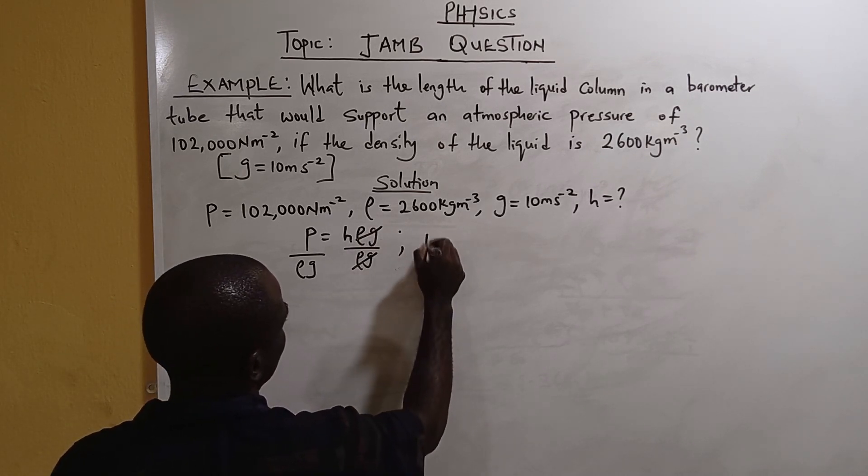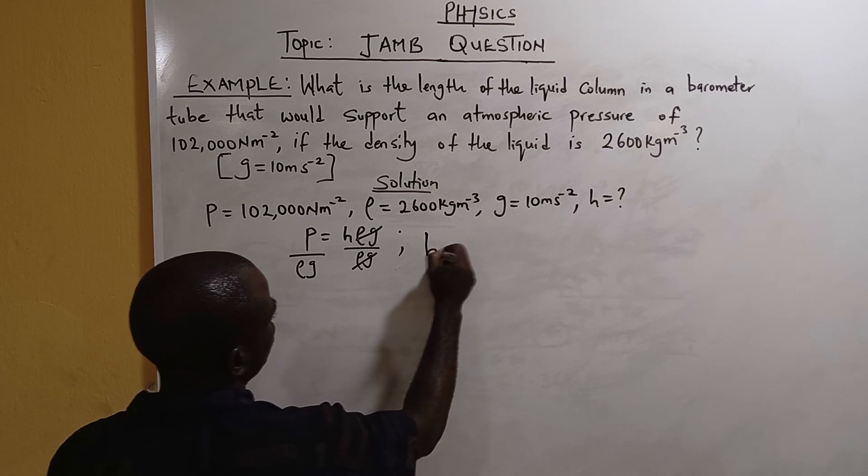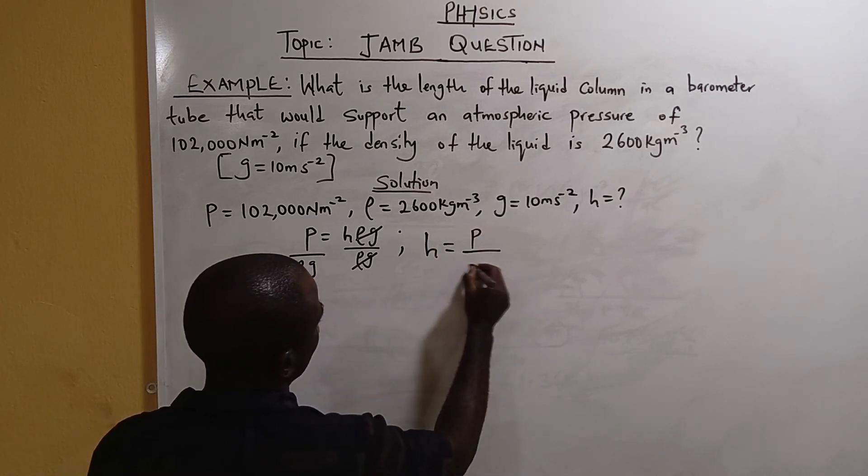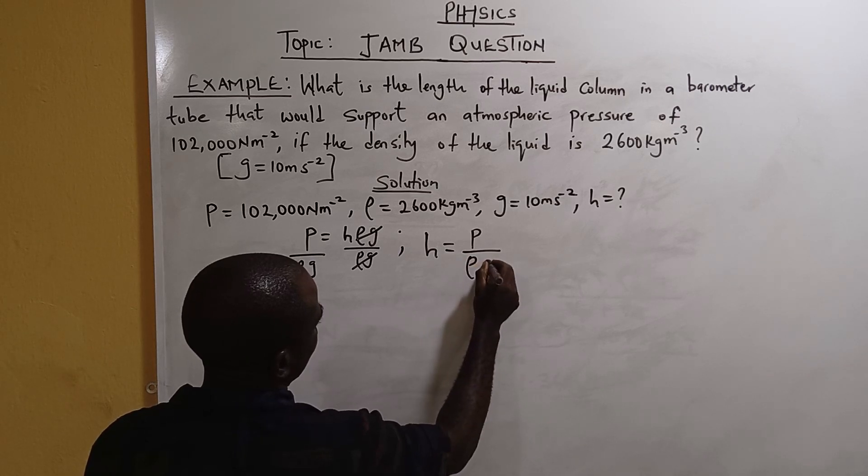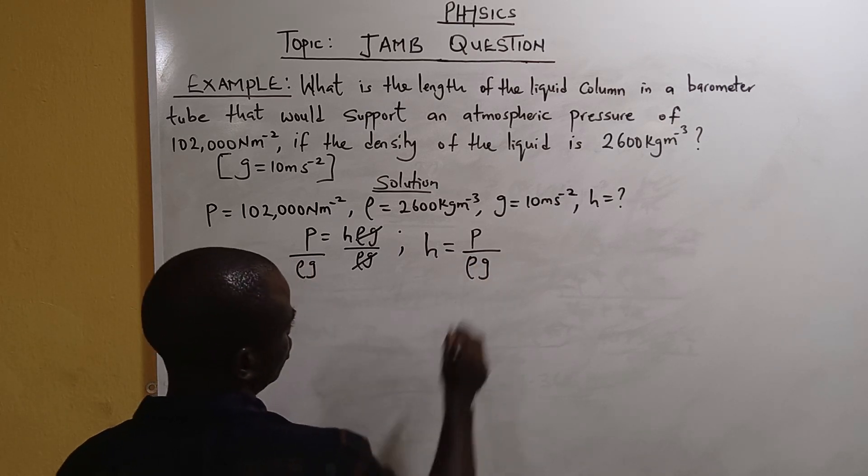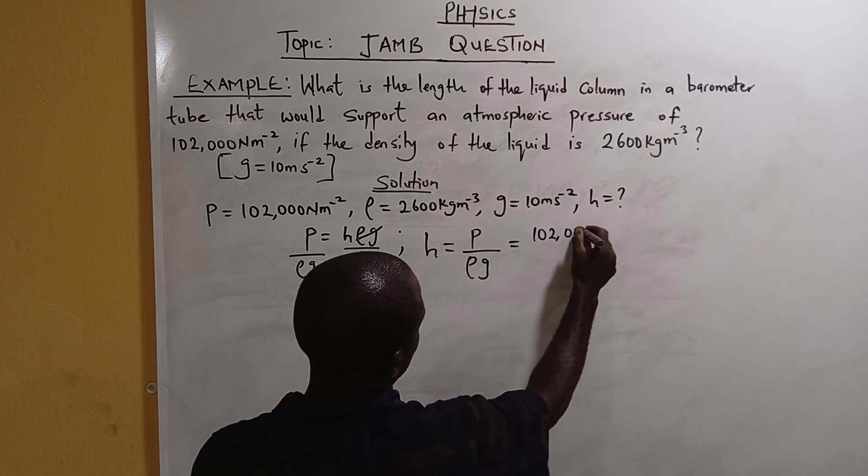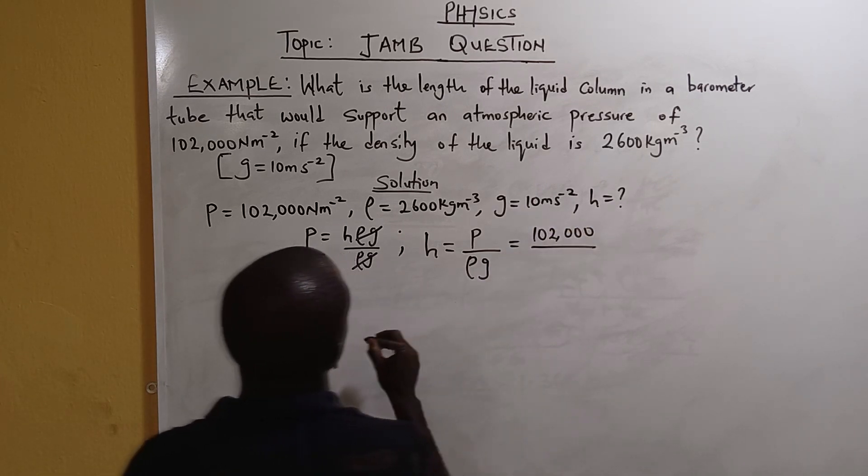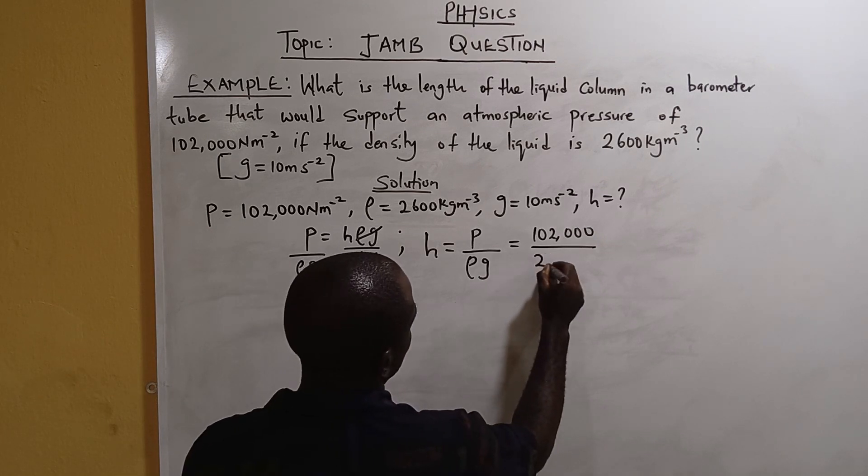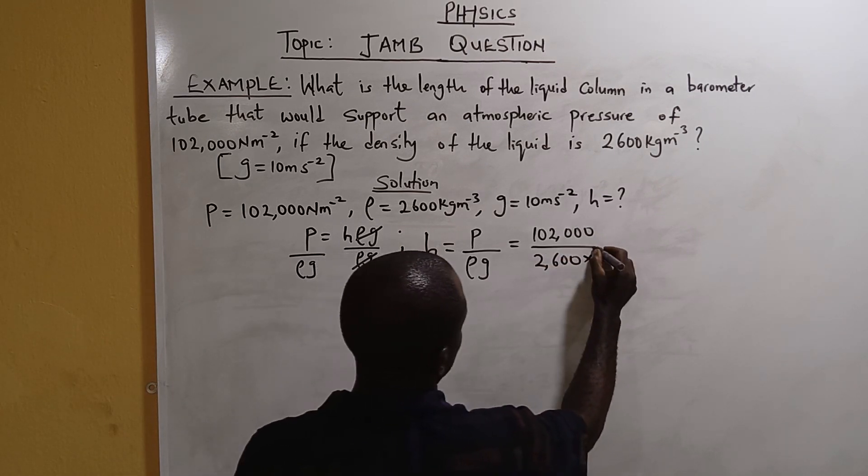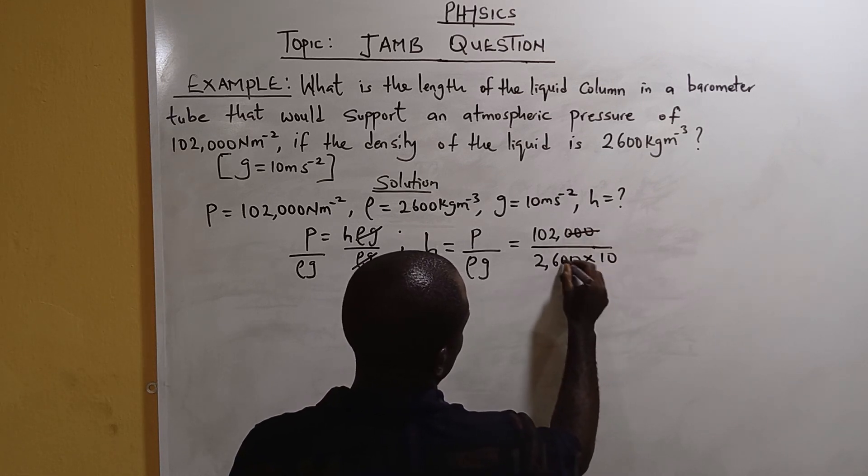Now for h, we have P as atmospheric pressure. We need to plug in the values. The pressure is 102,000 divided by 2,600 divided by 10. So we will cancel this.